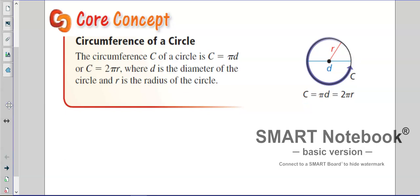Circumference of a circle is the distance around the circle. So we either take pi times the diameter or 2 pi r, but if you think about it, 2 times r is the diameter.